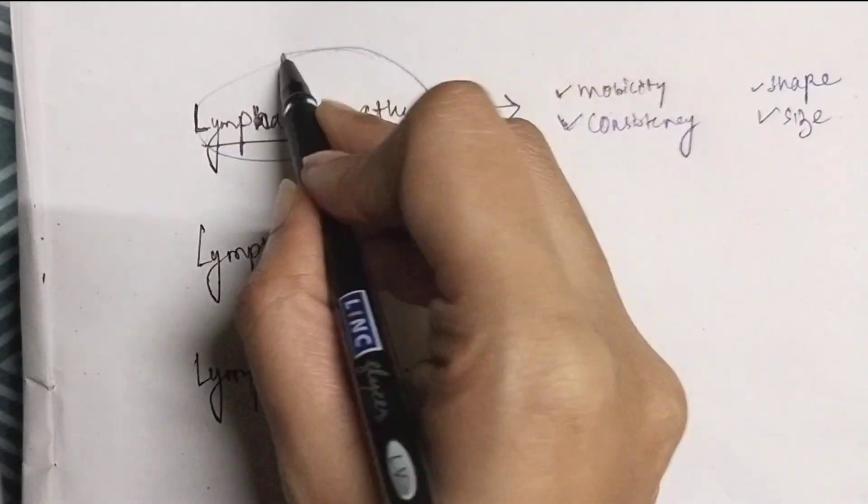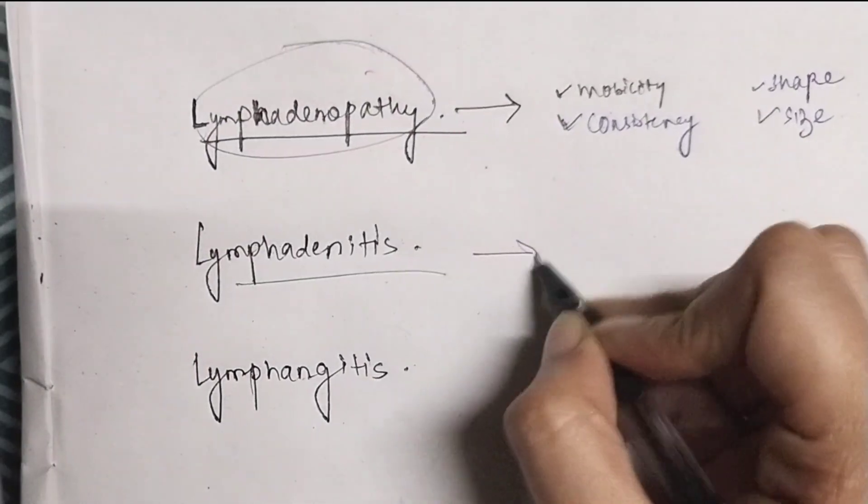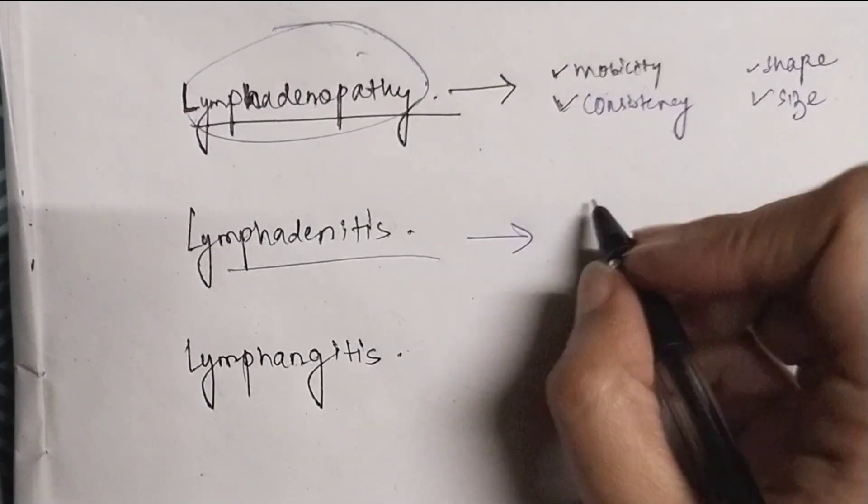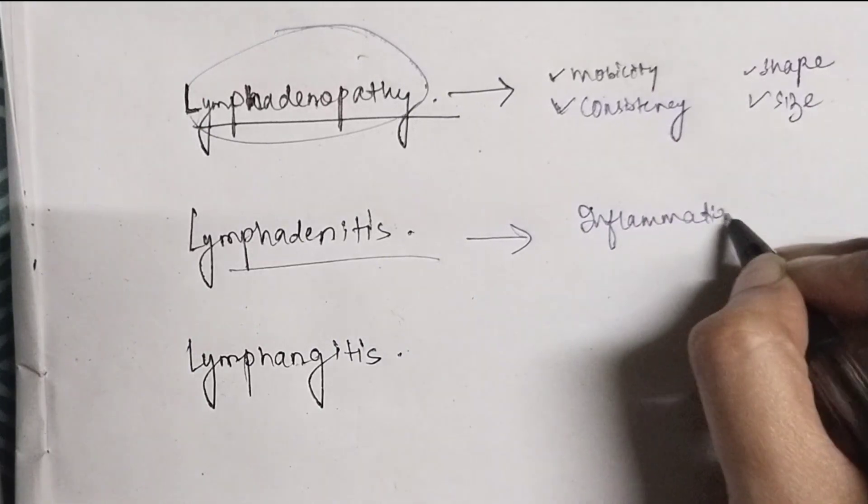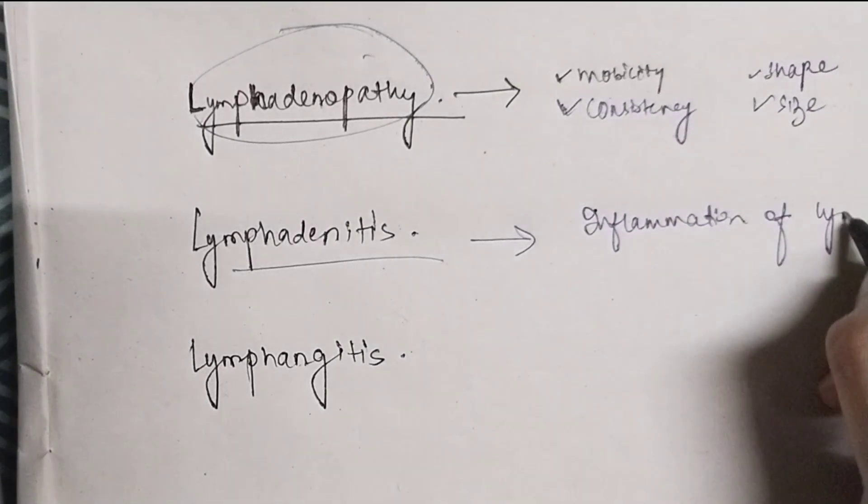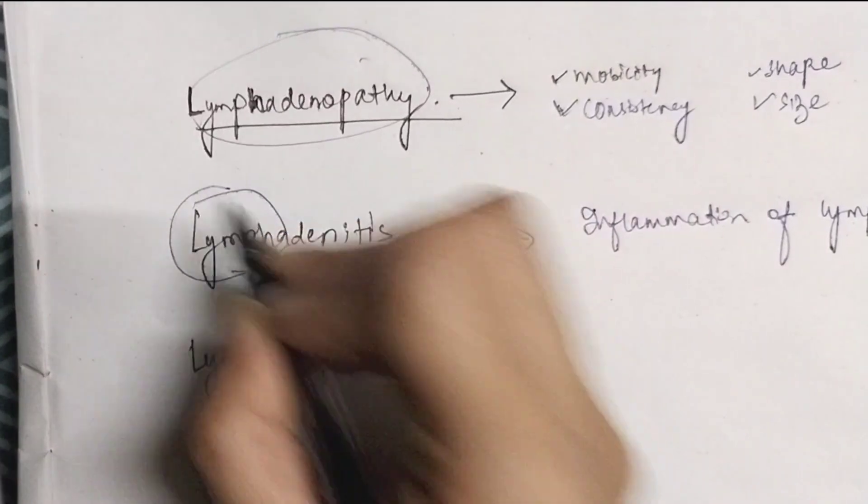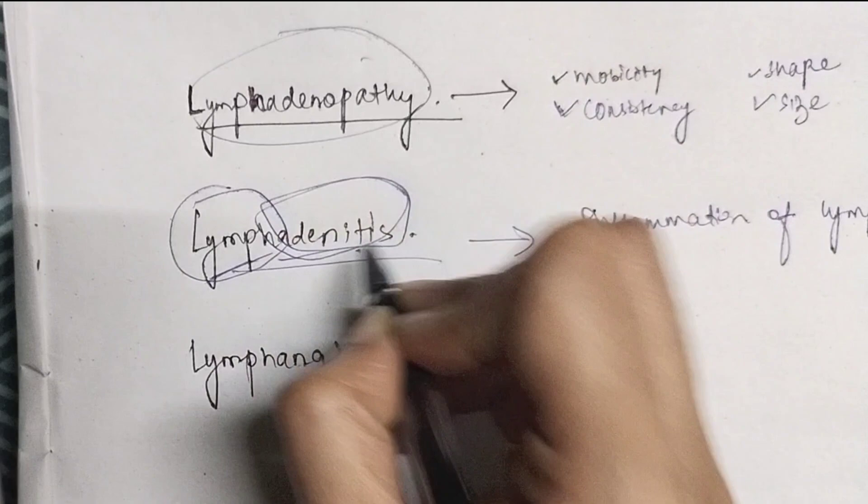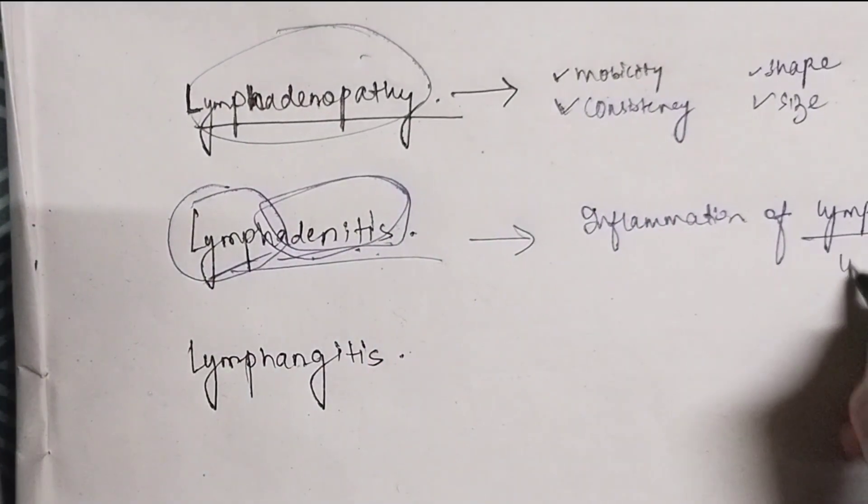What does lymphadenitis mean? Lymphadenitis means inflammation of lymphatic glands. Lymph, adeno is glands, itis is inflammation. So inflammation of glands, inflammation of lymphatic glands, which means actually the inflammation of lymph nodes.